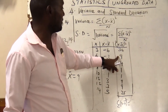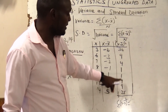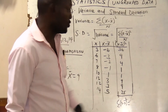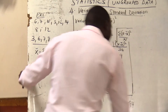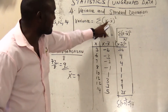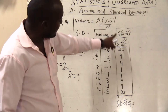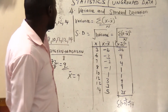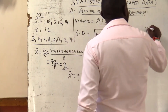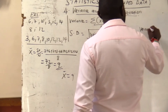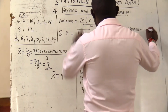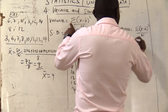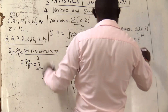Let me verify: 36 + 9 + 4 + 1 + 1 + 9 + 9 + 25. That gives us 94. So the summation of (x − x-bar)² equals 94. My variance will therefore be 94 divided by n. I have 8 data values.